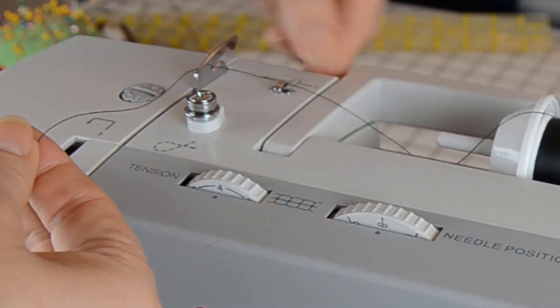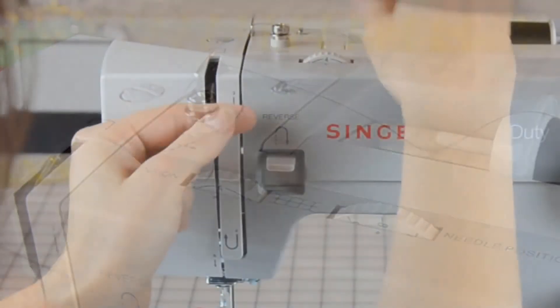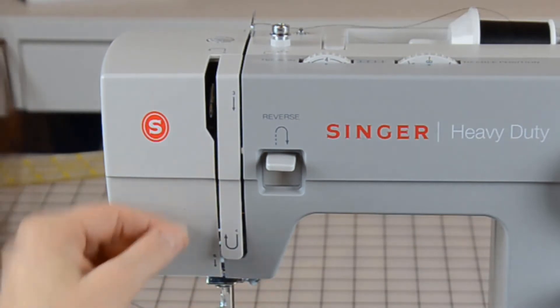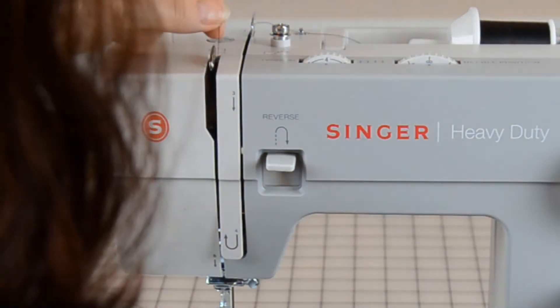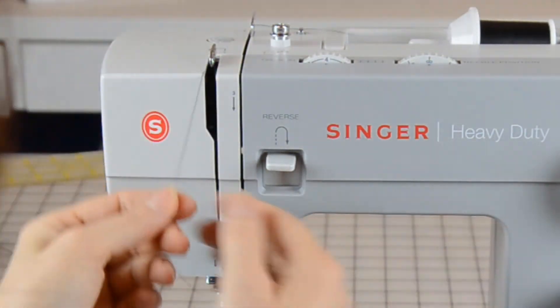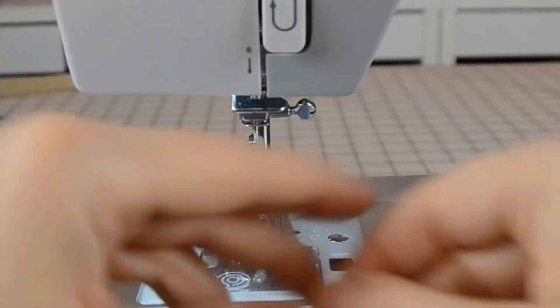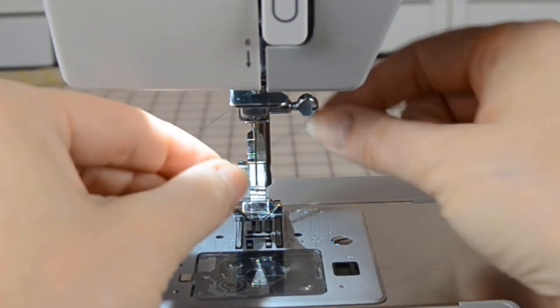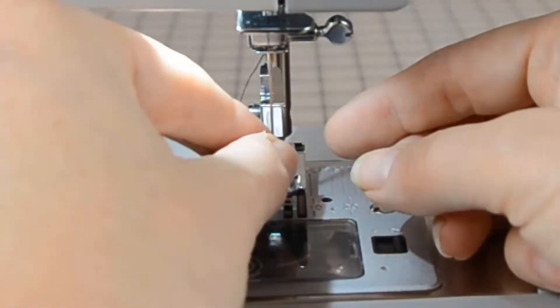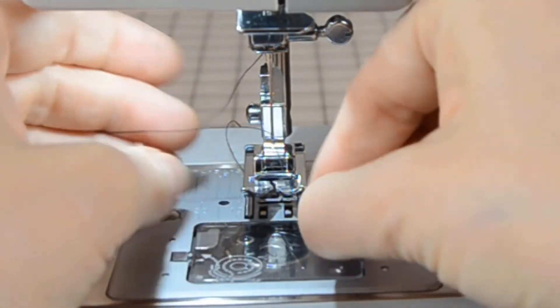To thread the machine, follow the numbers on the machine so that you know where the thread goes. Most machines have some sort of guide on them. Slide the thread through the front of the needle hole and out the back.